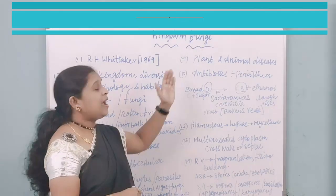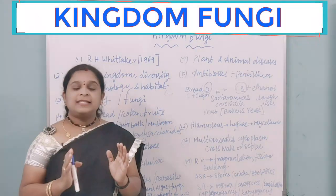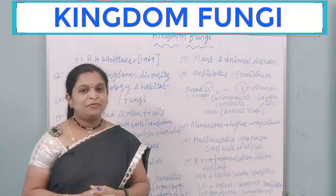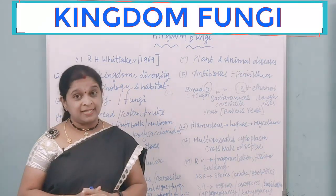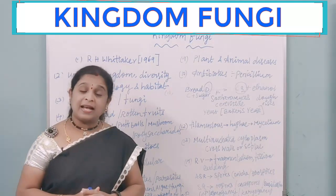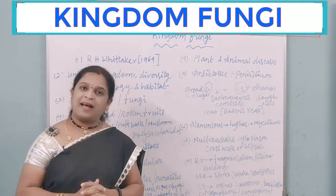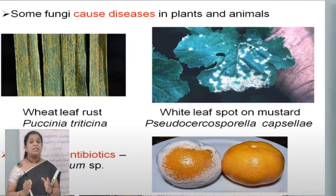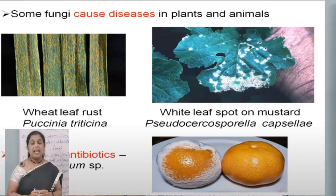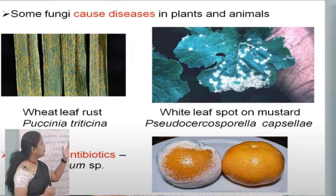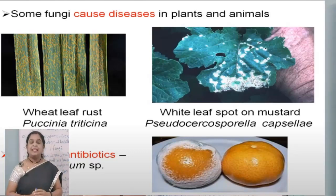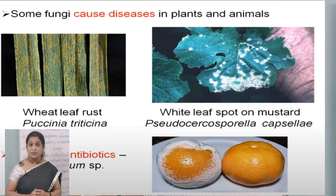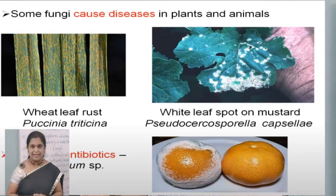Fungi can be both beneficial and harmful to plants and animals. For example, they cause diseases in plants — a rust disease caused to wheat is caused by a fungus called Puccinia.